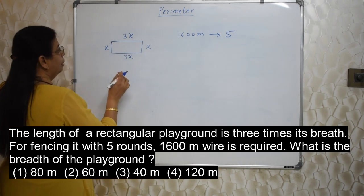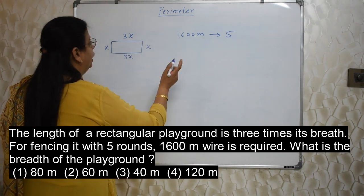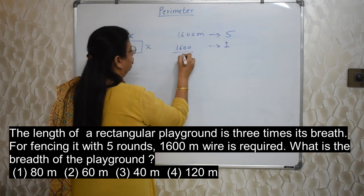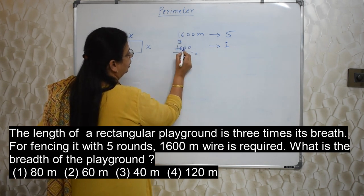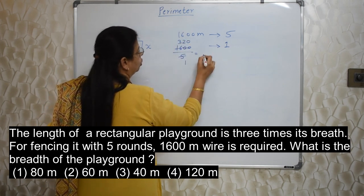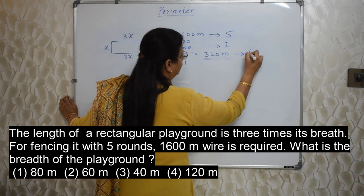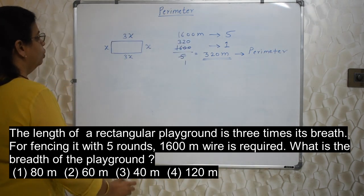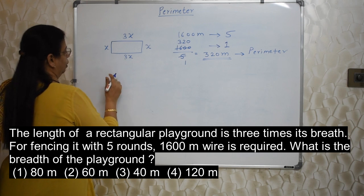And if we need to fence this 5 times, we require 1600 metre wire. If we want to do fencing 5 times, so how much is the perimeter? I told you earlier, perimeter is 1 time. 1 round is perimeter. So we need to find out 1 time. How to find out 1 time? 1600 divided by 5. So 5 ones are 5, 5 threes are 15, 1 is remaining, so 1 is attached to this 0, so 10. 5 twos are 10, and this 1, 0 please don't forget to give. So 320 metre is 1 round. 1 round is same as perimeter. 1 round means perimeter.